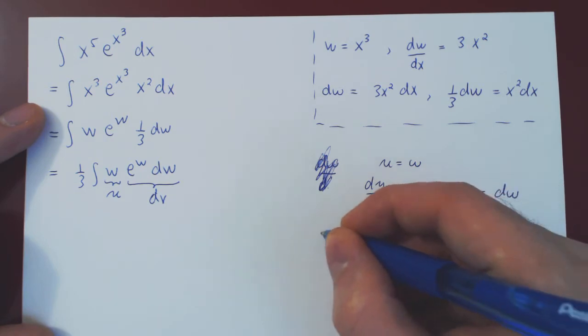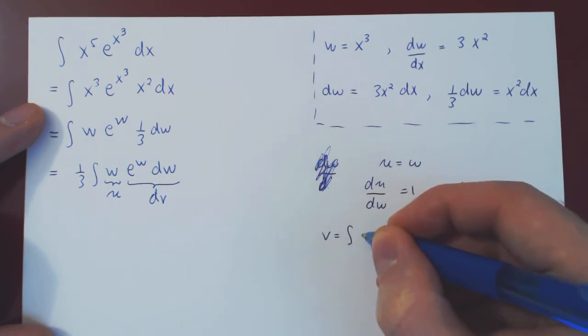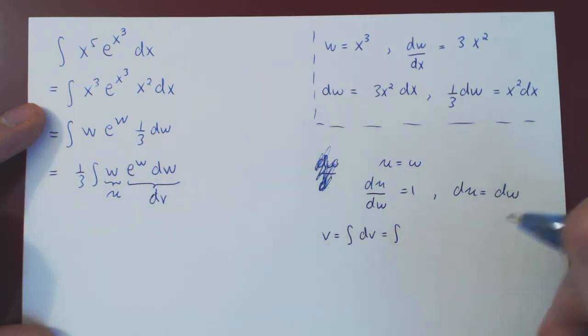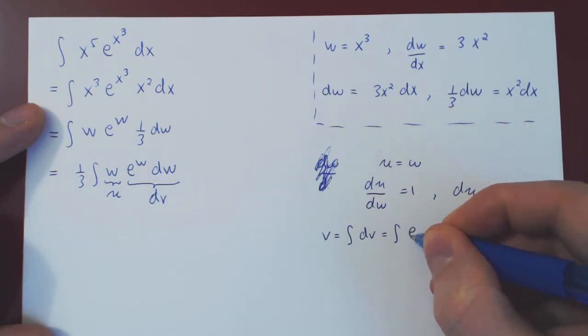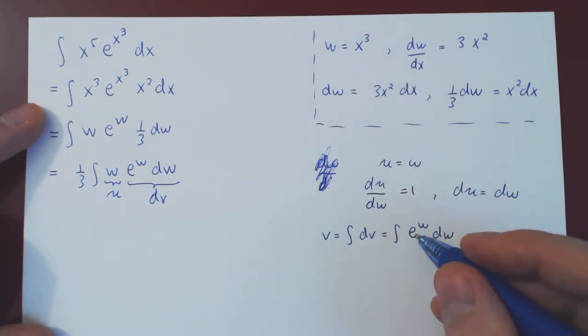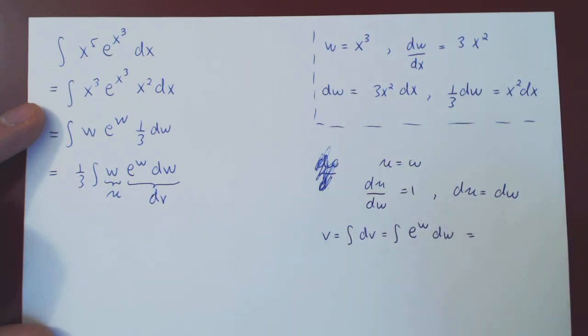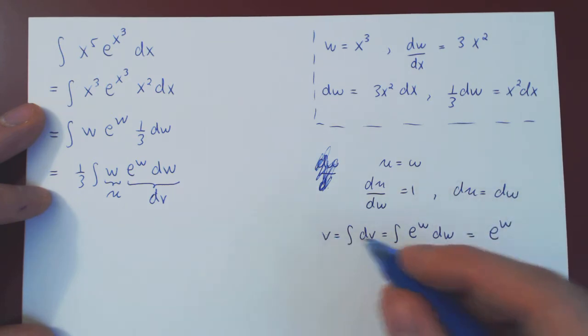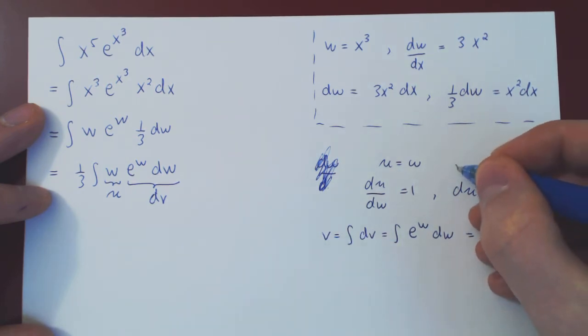As always, v is the integral of dv, which here is the integral of e to the w dw. And this is a trivial integral, right? The integral of e to the w is just e to the w. Differentiate this with respect to w, and of course, you get the same function. So, du is just dw, and v is e to the w.